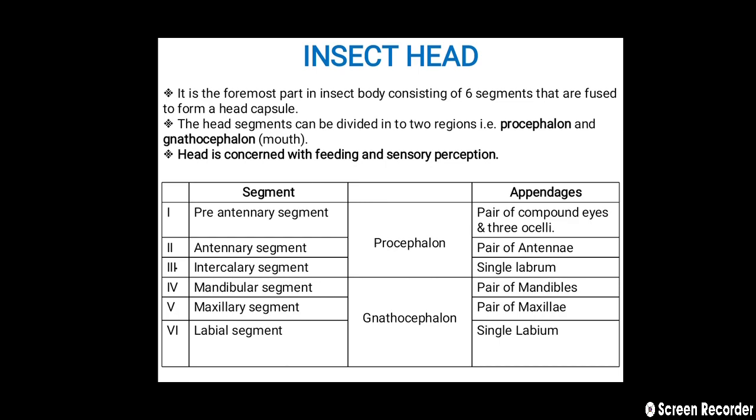The six segments of the insect head are: first, the pre-antennal segment, which bears appendages like a pair of compound eyes and three ocelli; second, the antennal segment, on which a pair of antennae are present; third, the mandibular segment, on which a pair of mandibles is present; fourth, the maxillary segment, on which a pair of maxillae are present; and fifth, the labial segment, on which a single labium is present.